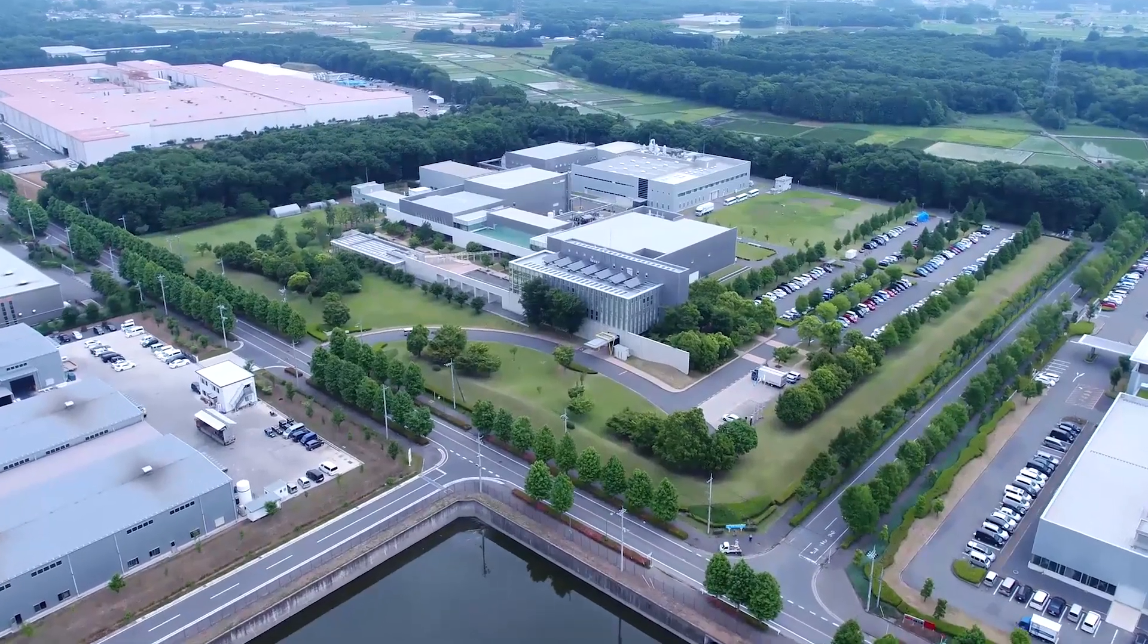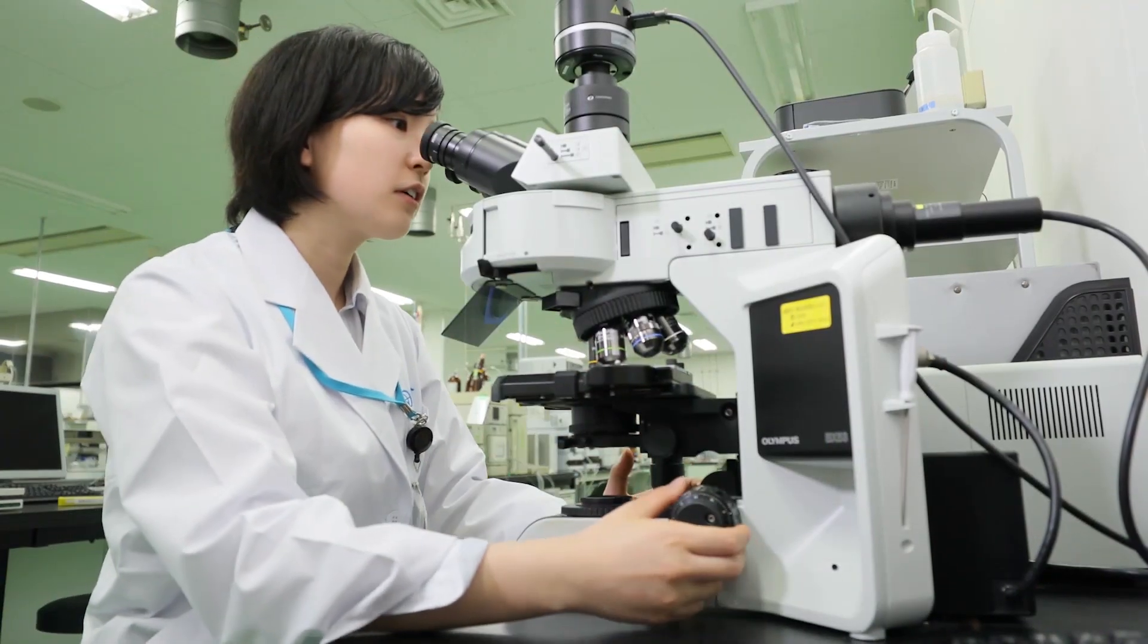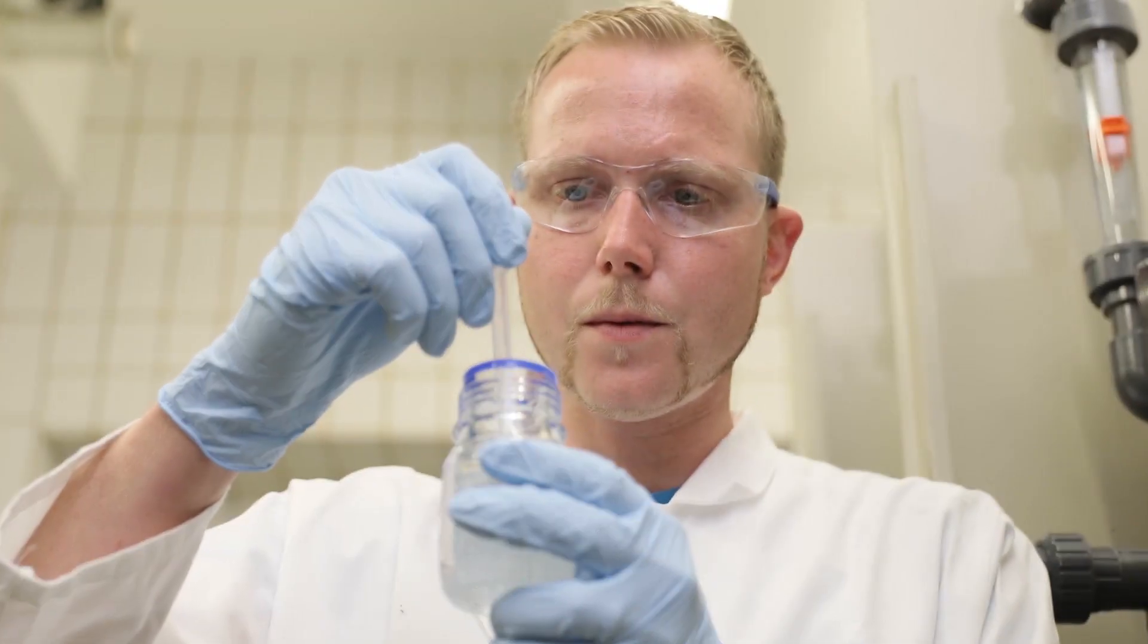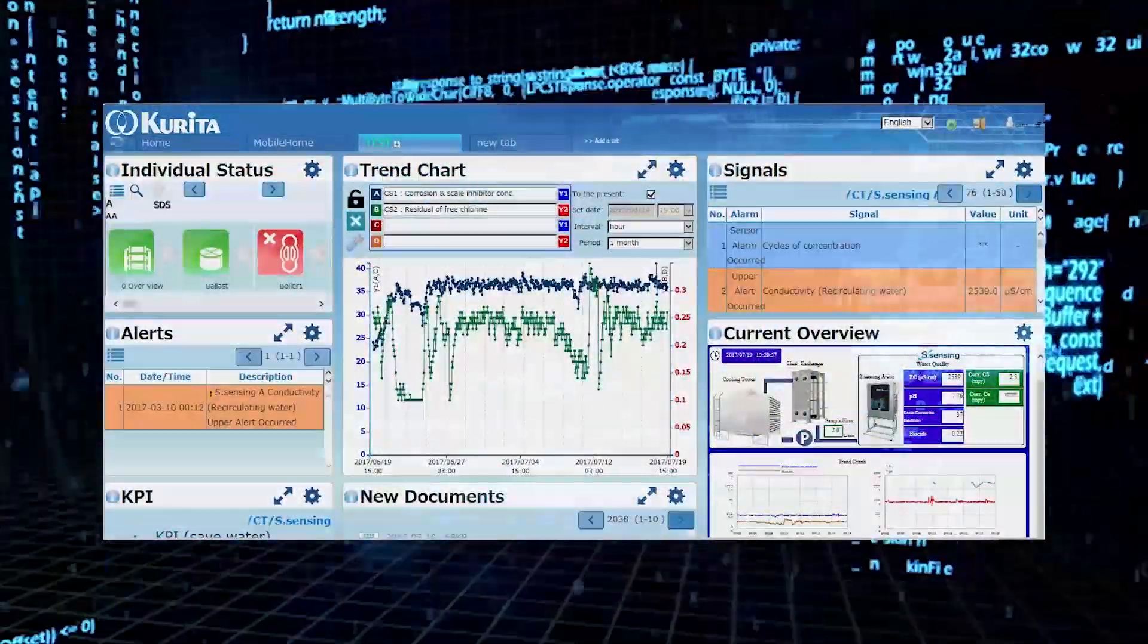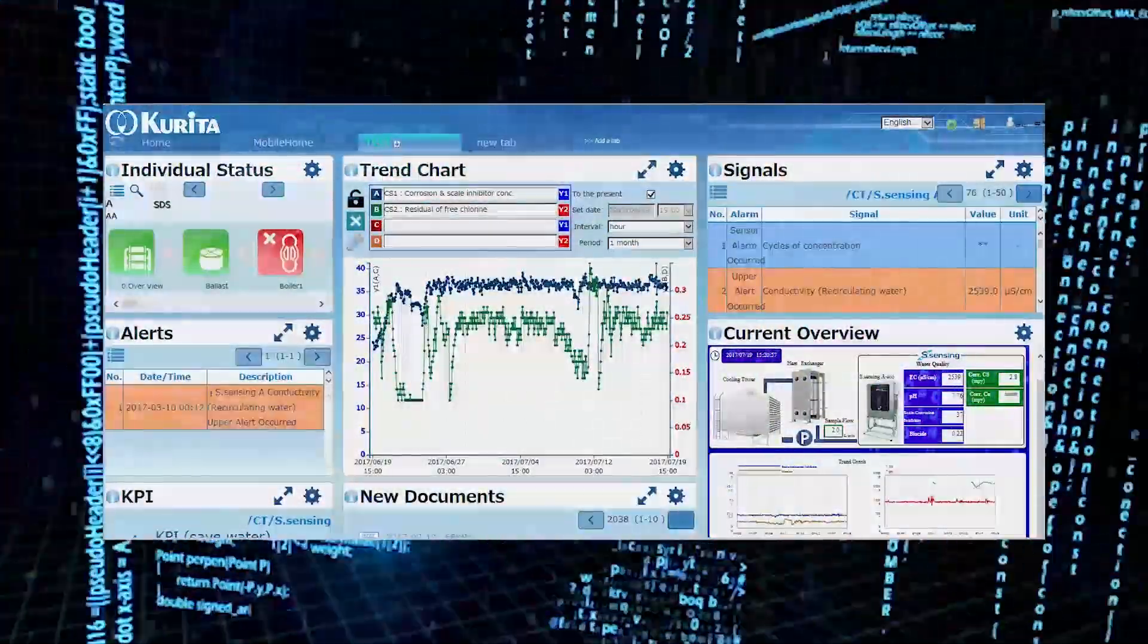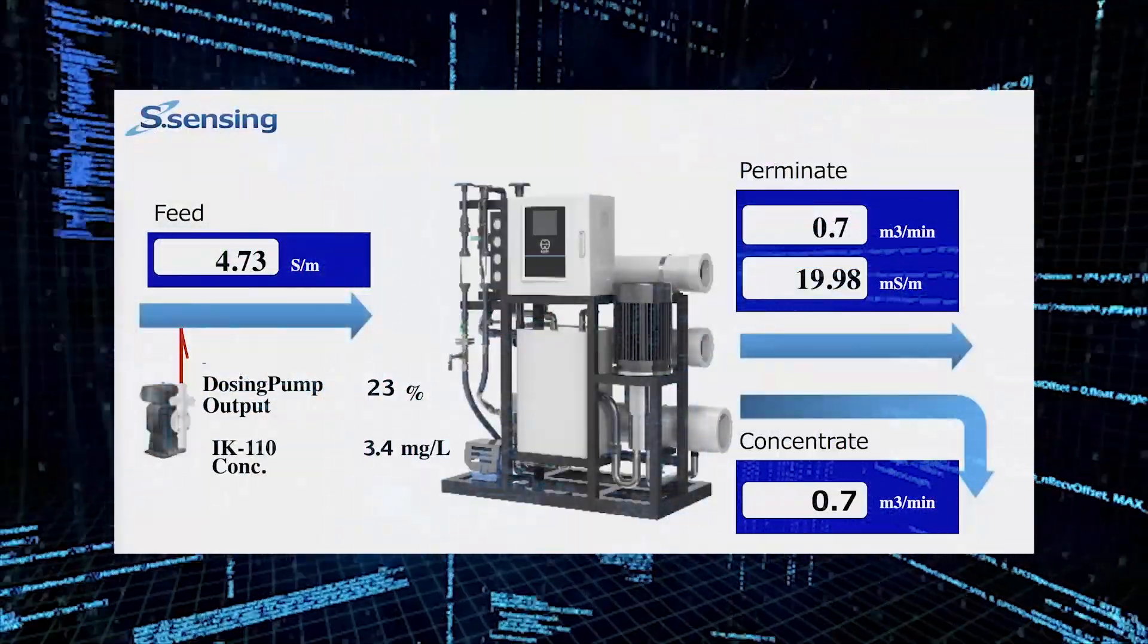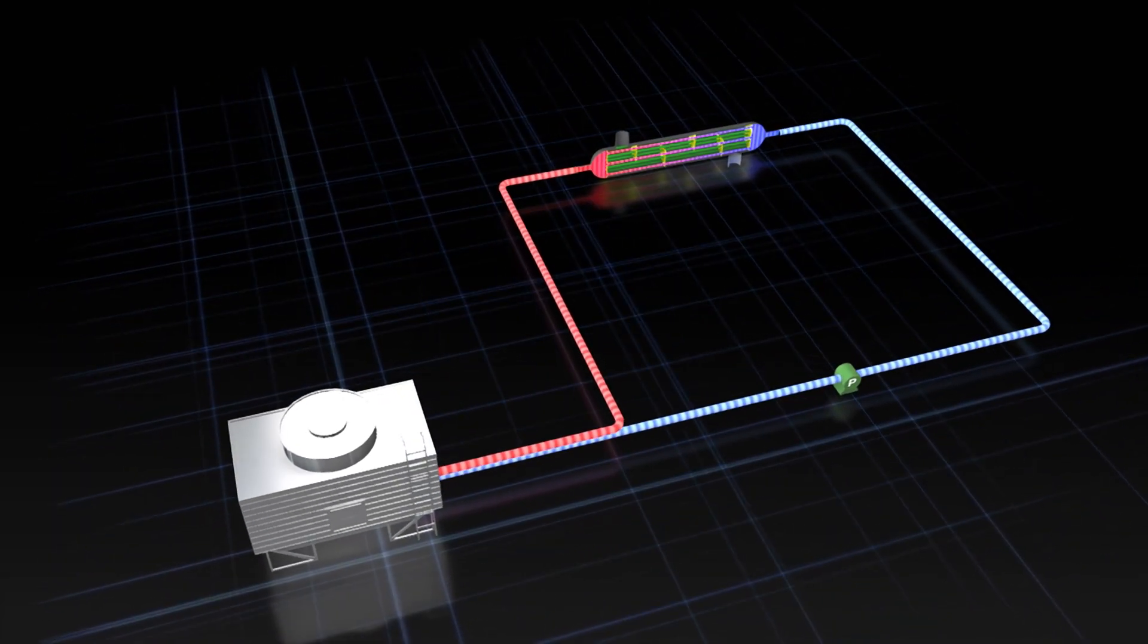Kurita is a company with a history approaching 70 years. We combine know-how built up over many years with equipment monitoring using IOT sensing technology to realize optimal operational control of water treatment equipment.